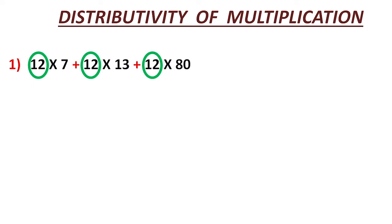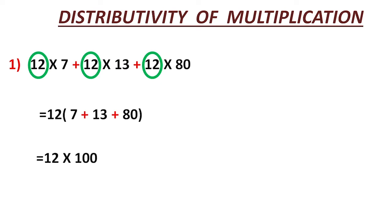That 12 we have to take outside the bracket. From the first term the remaining number is 7, the second term remaining number is 13, and the third term remaining number is 80. In between, addition sign comes, so we can write it as 12×(7 + 13 + 80). Simplify inside the bracket first: that means 12×100, which equals 1200. We just took the common number outside and simplified the remaining numbers, then multiplied.